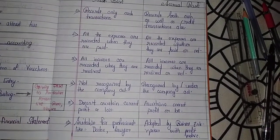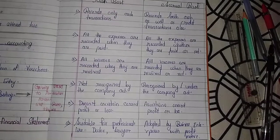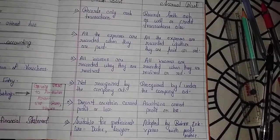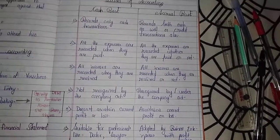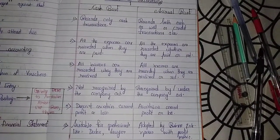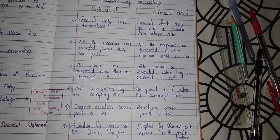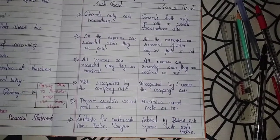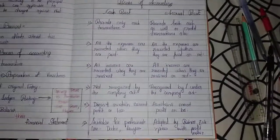Sixth, cash base is suitable for professionals like doctors and lawyers, whereas accrual base is suitable for businessmen with a profit motive.